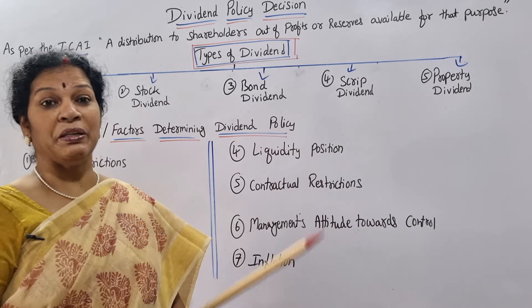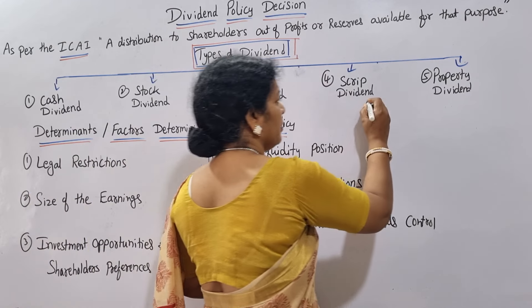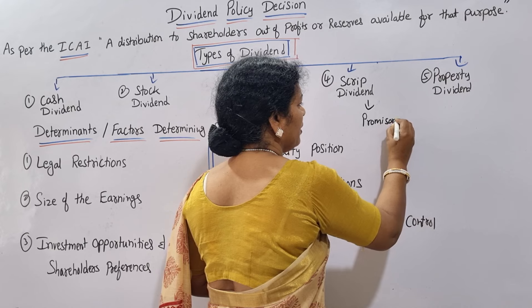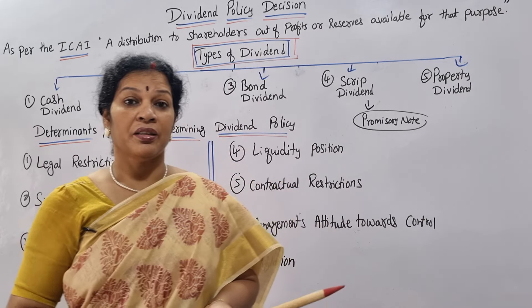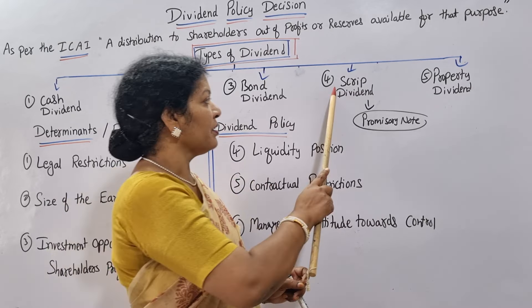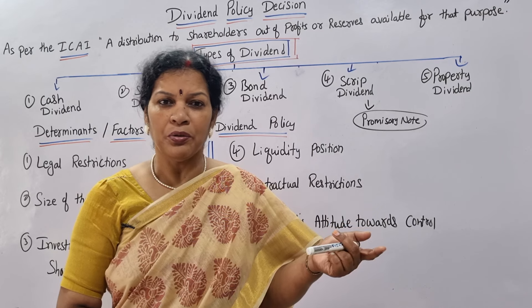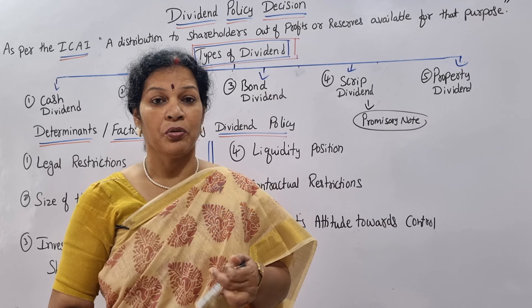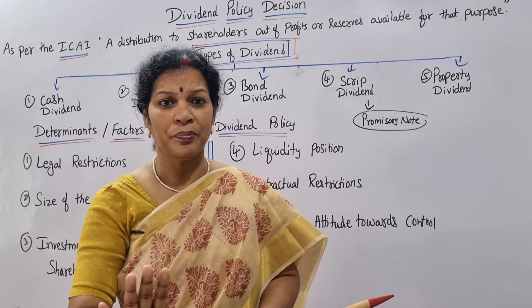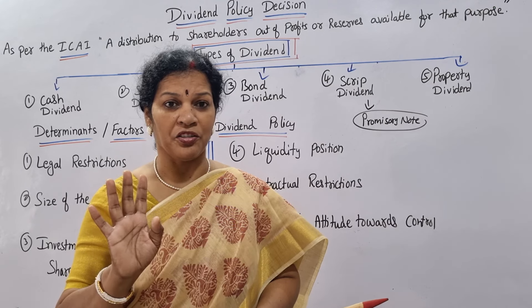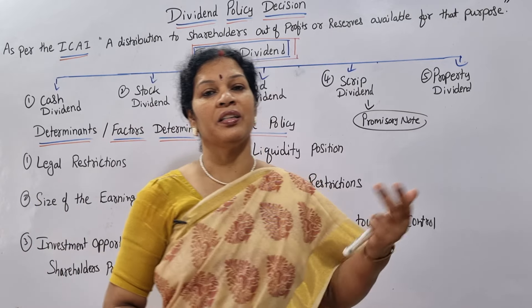The fourth type is script dividend. Script dividend means the company gives a promissory note in place of dividend. If a company is unable to pay, say, 5,000 rupees in dividend due to lack of cash or poor liquidity, they can issue a promissory note. The shareholder can encash it after three or four months. The company is paying, but not right now in cash or check form.